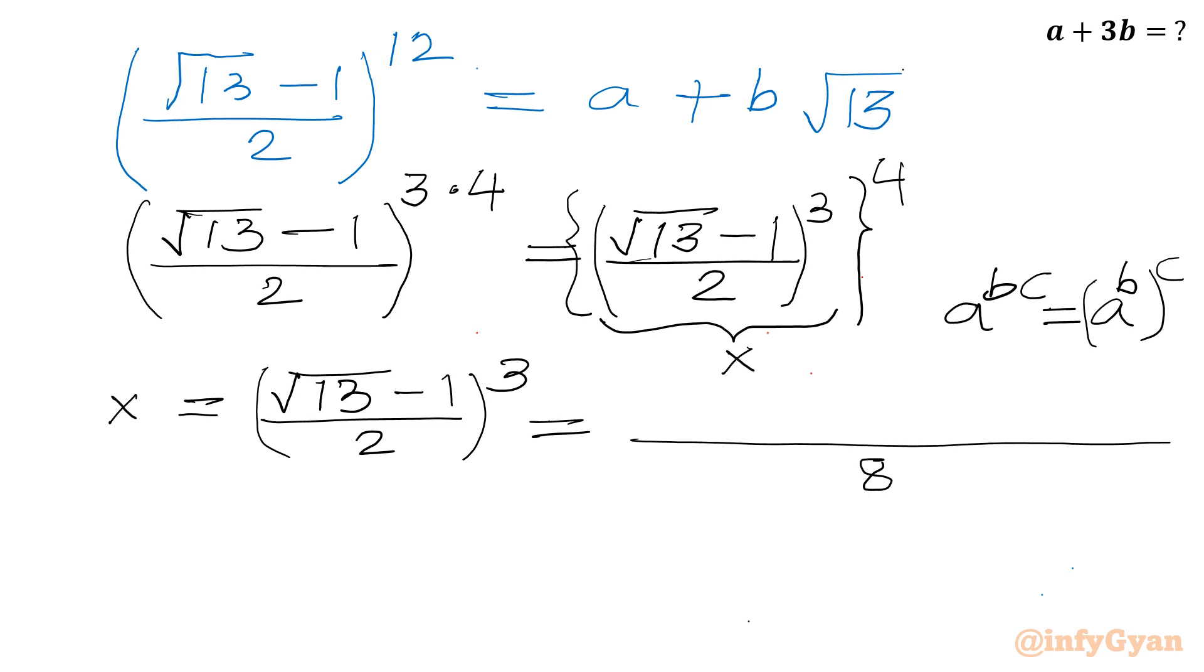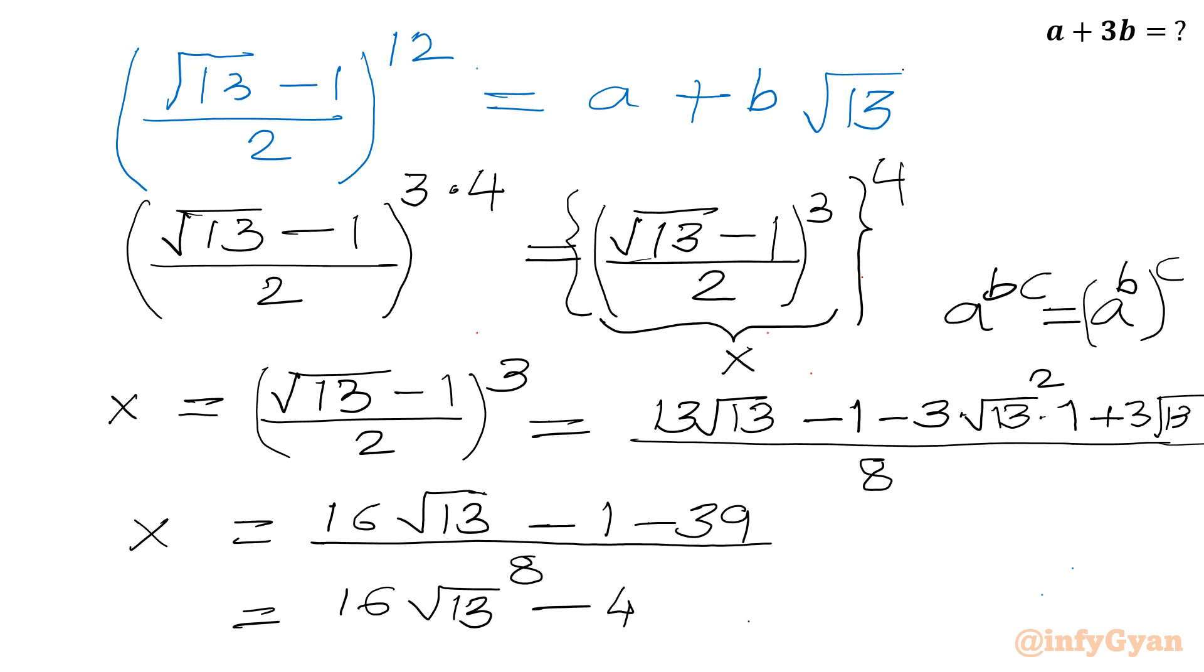Now square root 13 whole cube. So 13 root 13 a cube minus b cube minus 1 cube 1 minus 3 a square b. So I will write 3 times root 13 square times 1, and plus 3ab square. So plus 3 root 13 will be there. Now I will write x is equal to 13 root 13 and last 3 root 13. So 16 root 13. And then we are having minus 1. Then we are having 3 times 13. So 39 divided by 8. Further I can write this is equal to 16 root 13 minus 40 divided by 8. So I can divide by 8. So it will become 2 square root 13 minus 5. This is x.